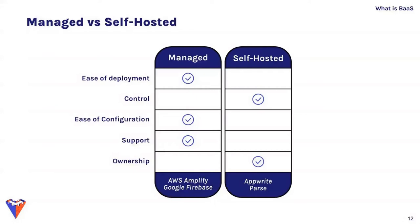A managed BaaS is easier to deploy, getting the product to market more quickly, but a self-hosted BaaS gives more control to modify backend code or infrastructure. A managed BaaS requires essentially no configuration and provides support, while a self-hosted BaaS requires configuration and offers no support. A self-hosted BaaS gives ownership over the backend, avoiding vendor lock-in — one of the most common complaints about managed BaaS products, which lock you into their interfaces making it difficult to migrate your application.